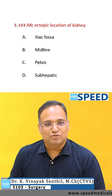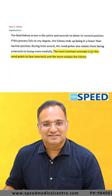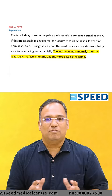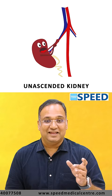Question for the day: the most common ectopic location of the kidney? The right answer is pelvis. Pelvis is the most common ectopic location, and it is an unascended kidney — also called a dropped kidney or ectopic kidney; these terms mean the same.